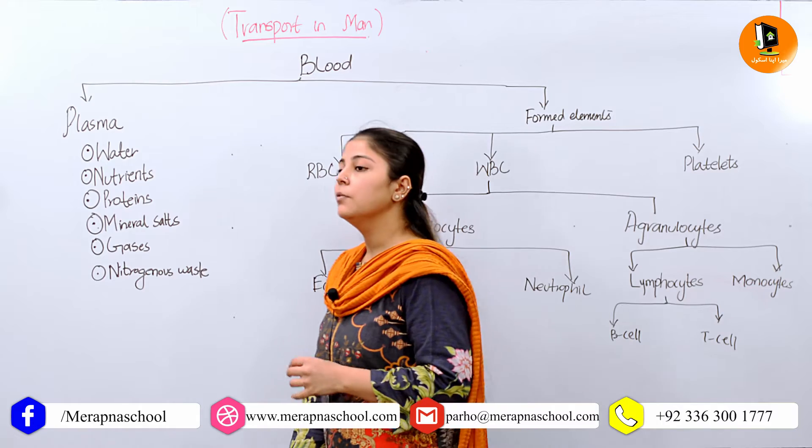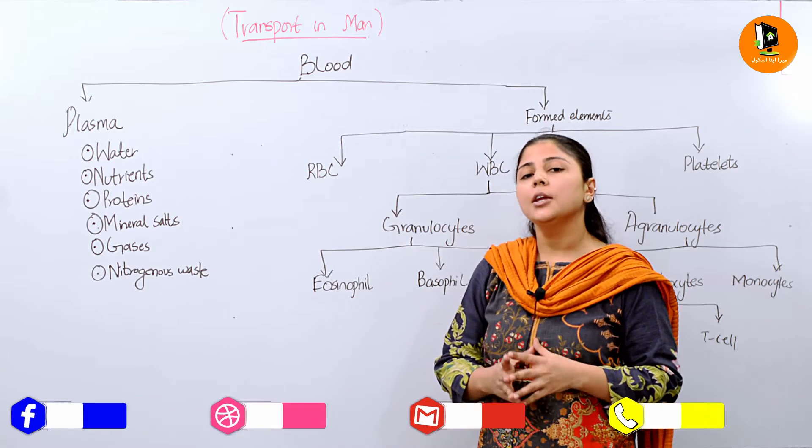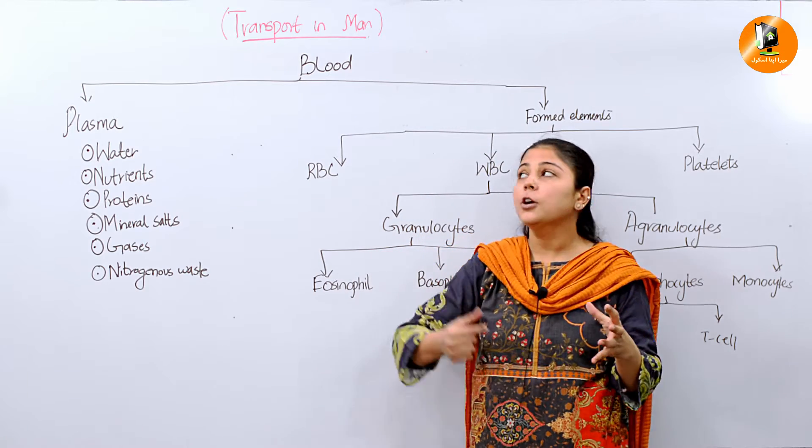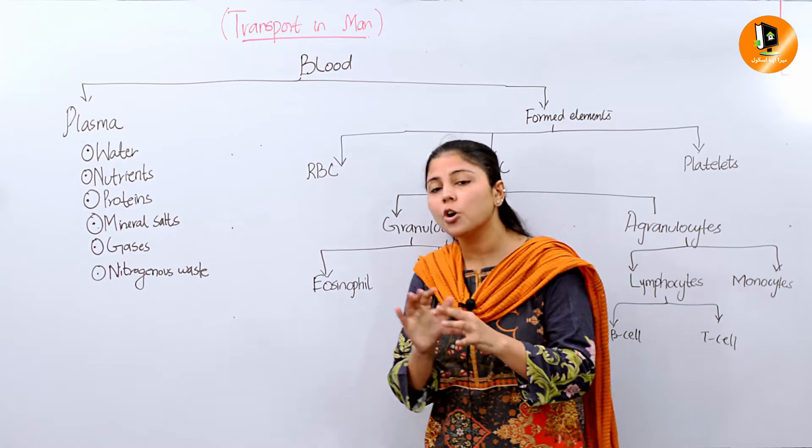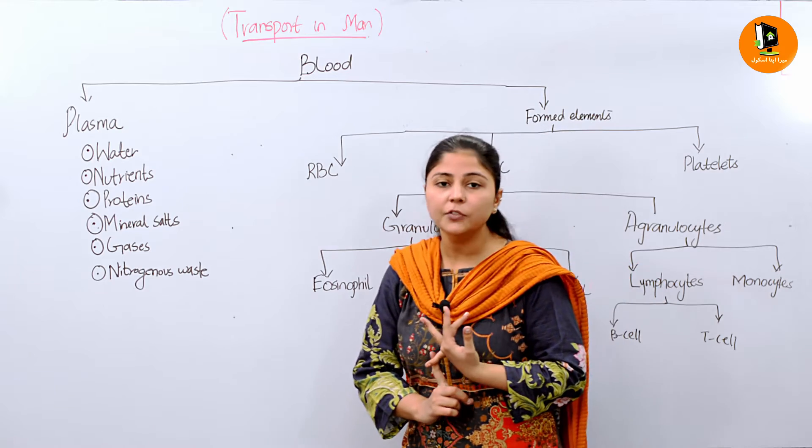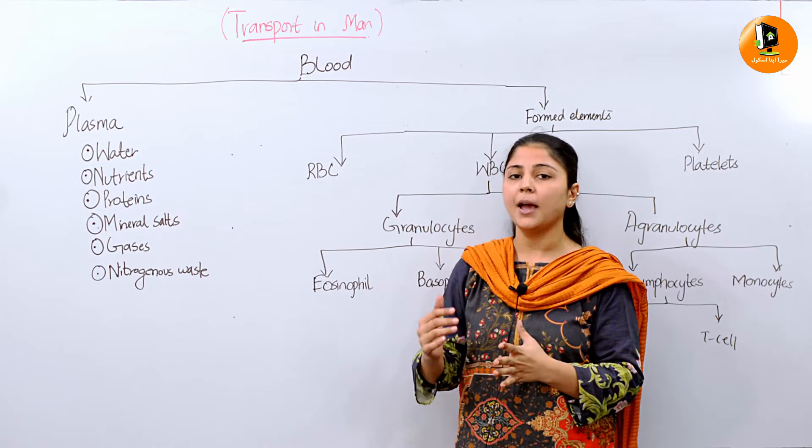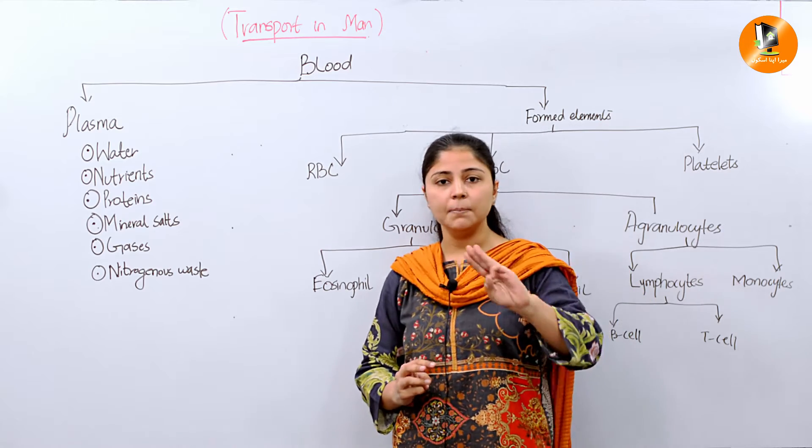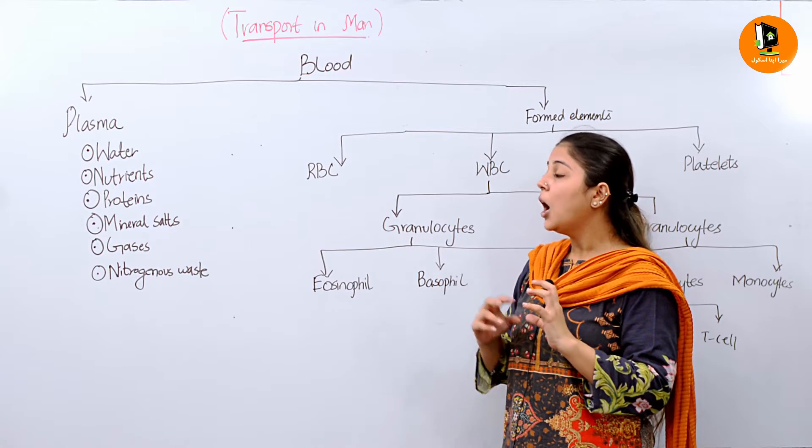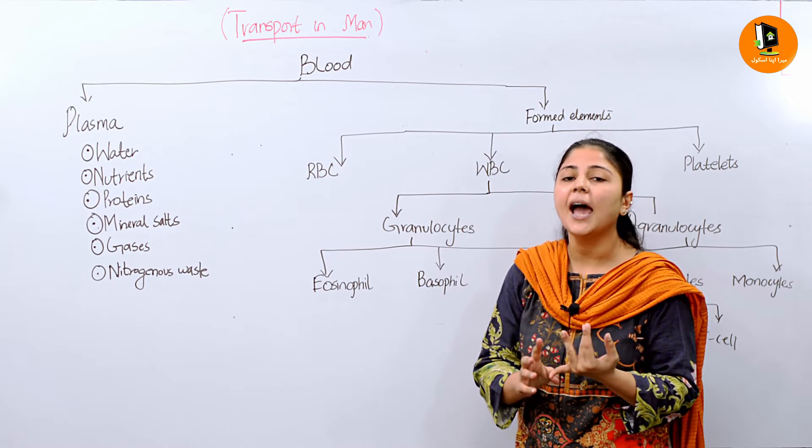Before starting the composition of blood, we need to know that transport in man has three important components. Before coming to that topic, let's discuss these three components. We are mainly discussing the blood, the structure of the heart, and the blood vessels. These are the three important components of the circulatory system in man.